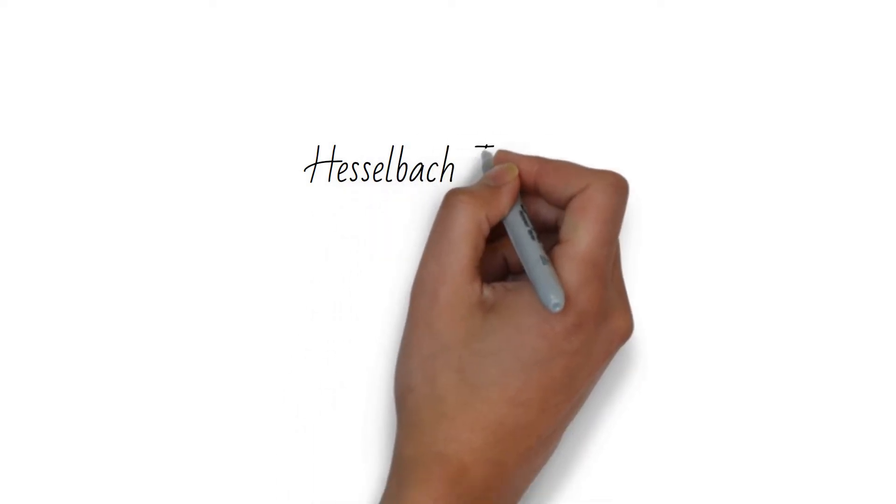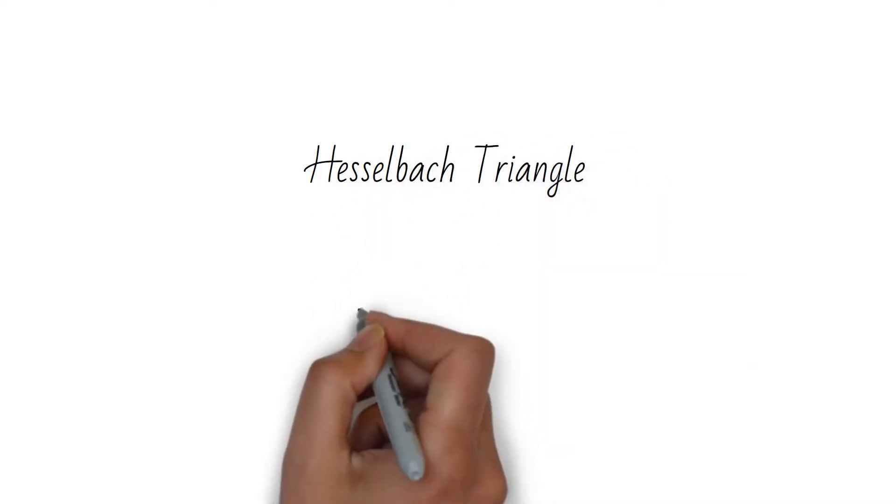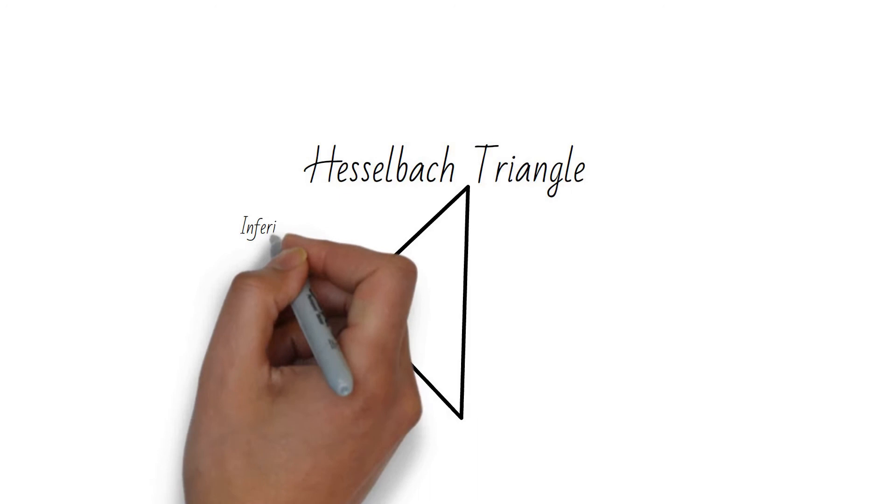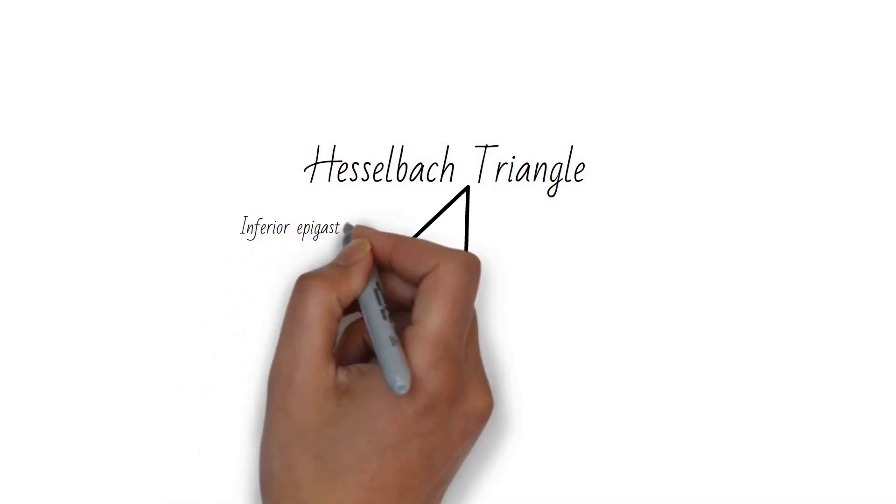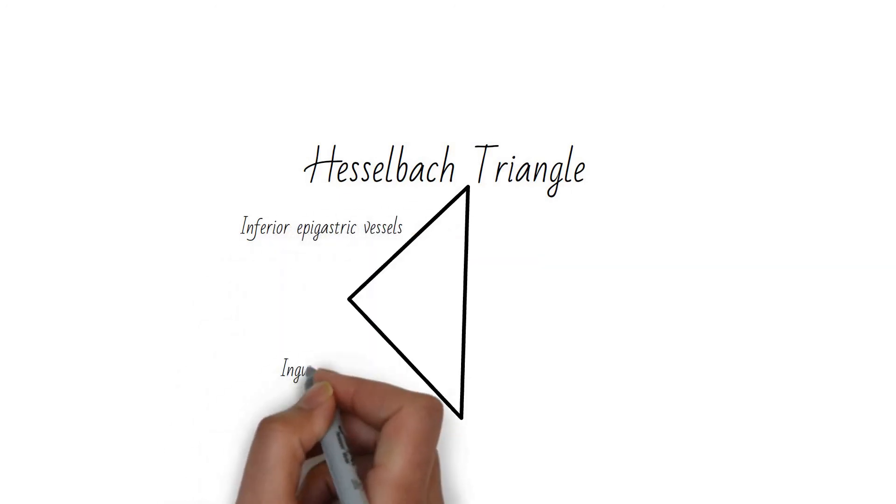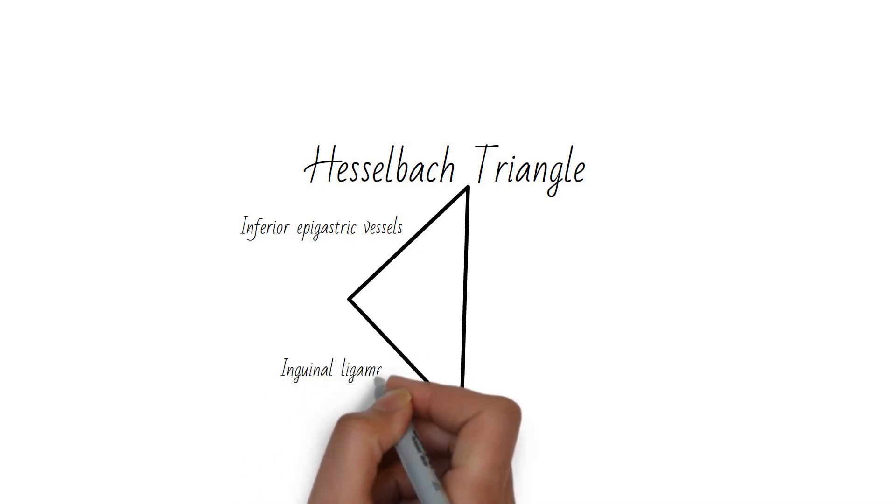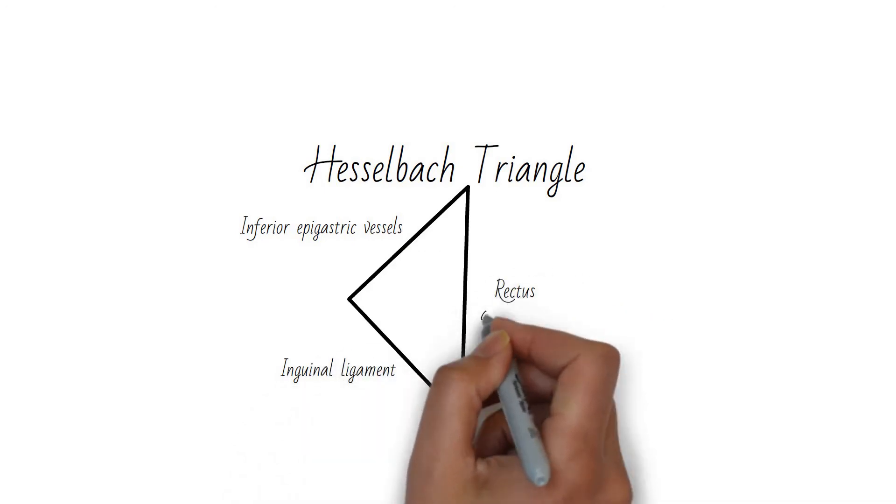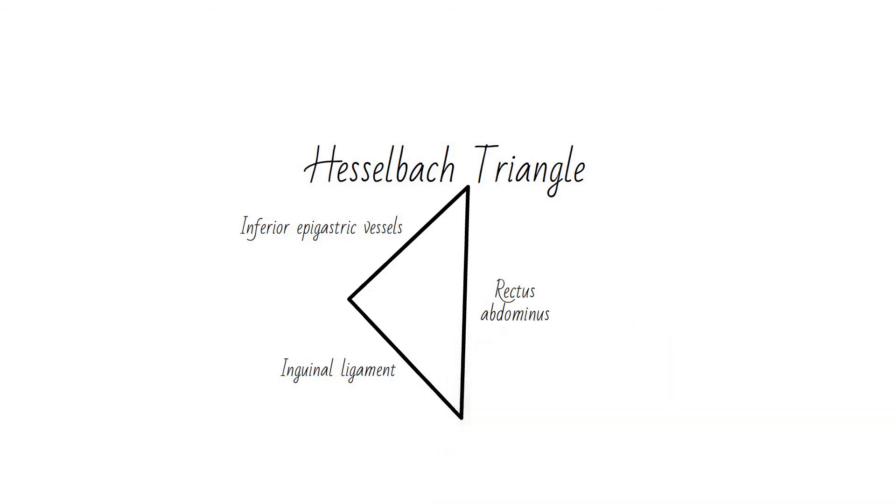The Hesselbach triangle is made up of the rectus abdominis medially, the inferior epigastric vessels supralaterally, and the inguinal ligament inferolaterally. Direct hernias travel through this triangle, helping to distinguish them from indirect hernias.